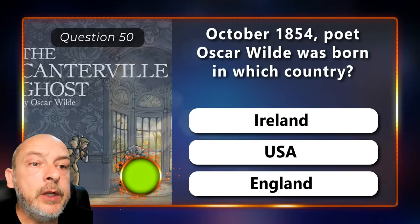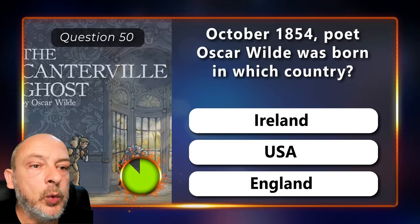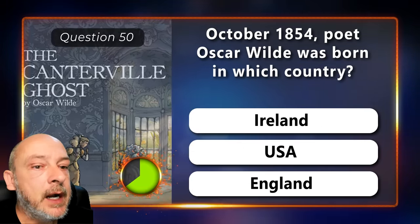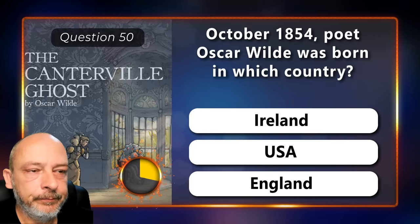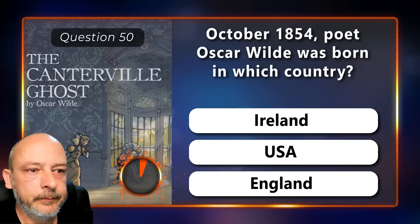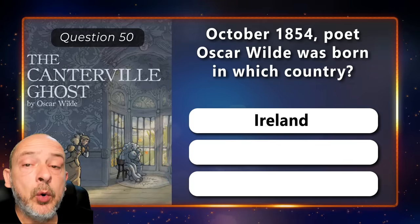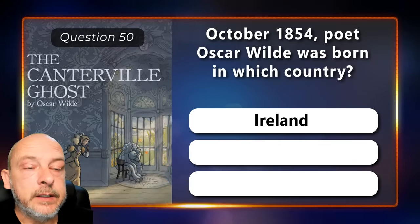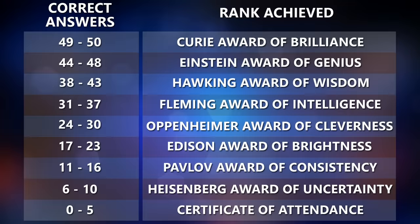October 1854: poet Oscar Wilde was born in which country — Ireland, USA, or England? He was born in Ireland. And we have reached the end of today's trivia quiz!